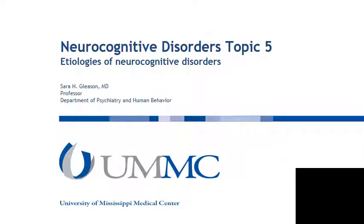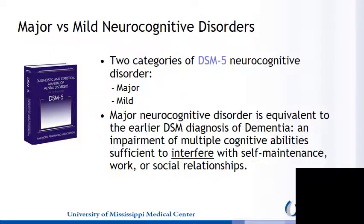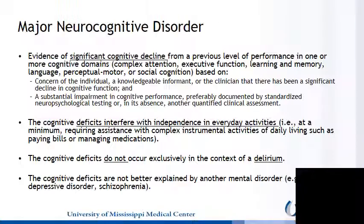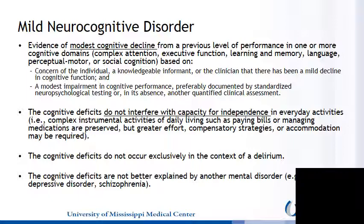Neurocognitive Disorders, Topic 5: Etiologies of Neurocognitive Disorders. In previous modules, we have reviewed two categories of DSM-5 diagnoses for Neurocognitive Disorder: Major Neurocognitive Disorder and Mild Neurocognitive Disorder. The criteria for Major Neurocognitive Disorder were discussed in the prior module, as was Mild Neurocognitive Disorder. We will now move forward to various etiologies of these disorders.